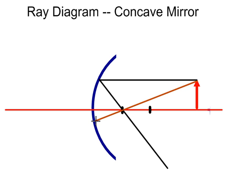Once it hits the mirror, it's going to reflect parallel to the principal axis. So we have our first two rays drawn.